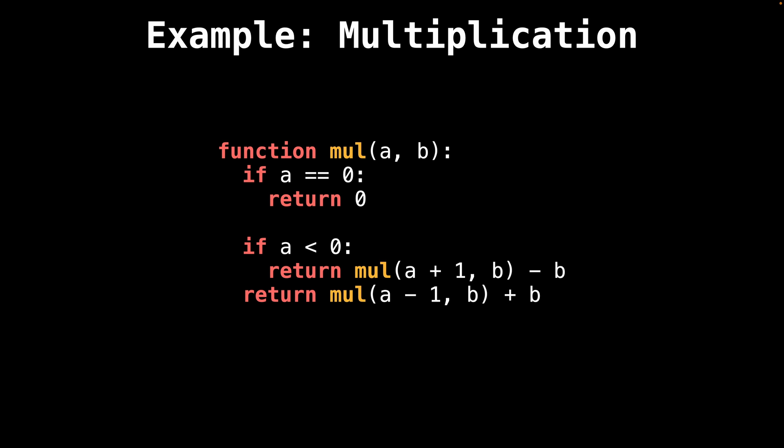Okay, hopefully you guys gave that a try. Here's the full recursive multiplication function solution. The only thing we need to do to support negative values is to add another branch that checks when a is less than zero. When a is less than zero inside the branch, a will be negative, so we want to add one to the value of a to increase the value and get a closer to zero, which is our base case.